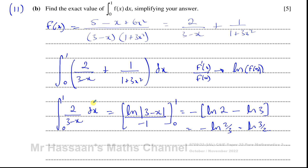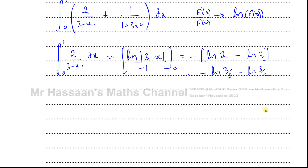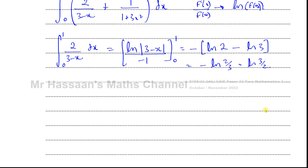Now I want to do the same thing for the second part. I need to integrate between limits 0 and 1: 1/(1 + 3x²) with respect to x. Here I cannot use the same method, because if I differentiate the denominator I get 6x, and the numerator is just the constant 1, so I can't use the reverse chain rule.